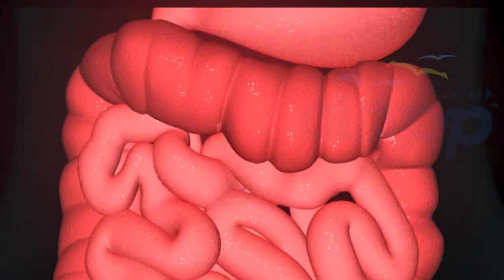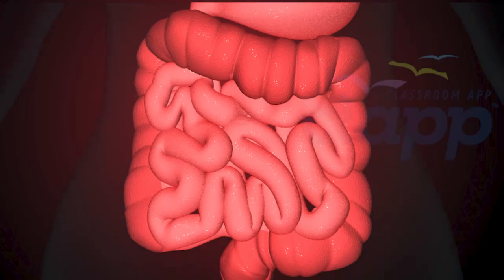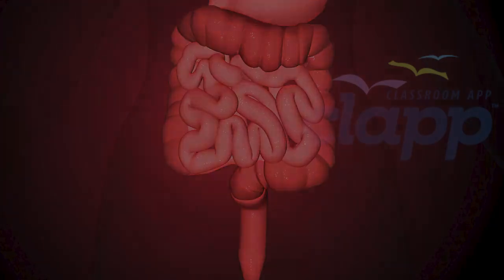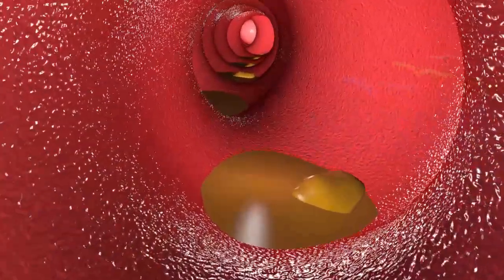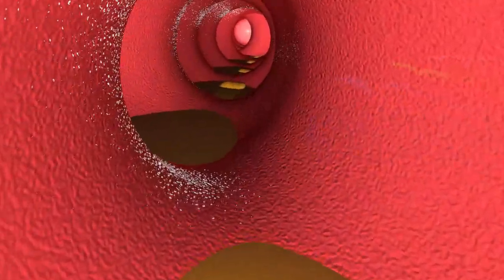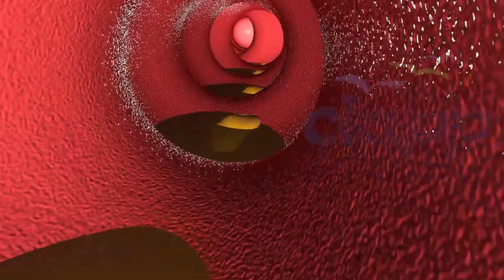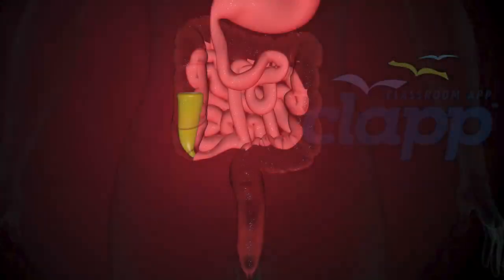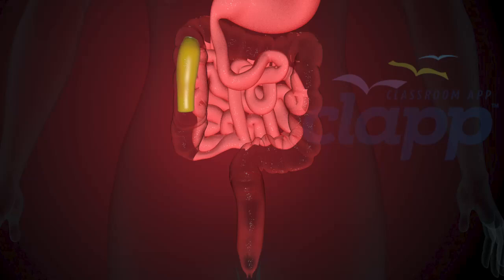The large intestine is named for the diameter of its cavity, not its length — it is actually much shorter than the small intestine. The large intestine is about 150 centimeters long and three to eight centimeters wide. The role of the large intestine is to absorb any extra water from the digested material before it is finally excreted. If food passes through the large intestine too quickly, too little water is absorbed and you might have diarrhea.